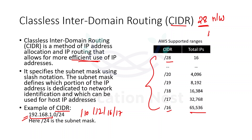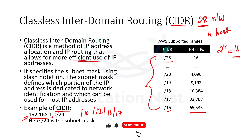With slash 28, we are left with just four bits for the host part. So that would be 2 to the power of 4, that is 16 — so we can get 16 IP addresses for hosts. The remaining 28 bits represent our network. So this is the smallest network on AWS, and slash 16 is the largest.